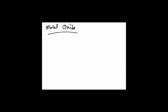That was a non-metal oxide. Now we want to do a metal oxide. An example of a metal might be potassium. So that'd be K2O — not KO. K has a charge of 1 and O has a charge of minus 2. Metal oxides plus water, written as HOH, same as H2O, always make a base.